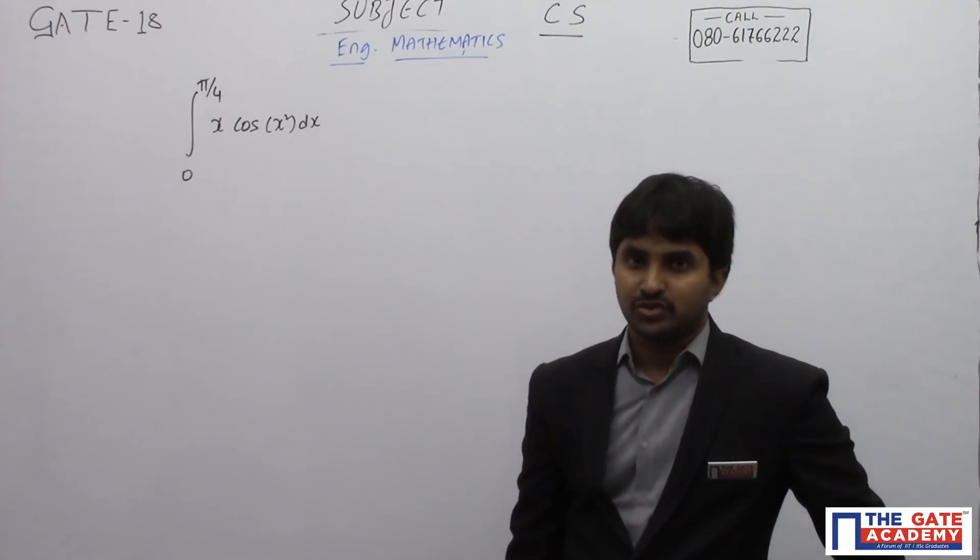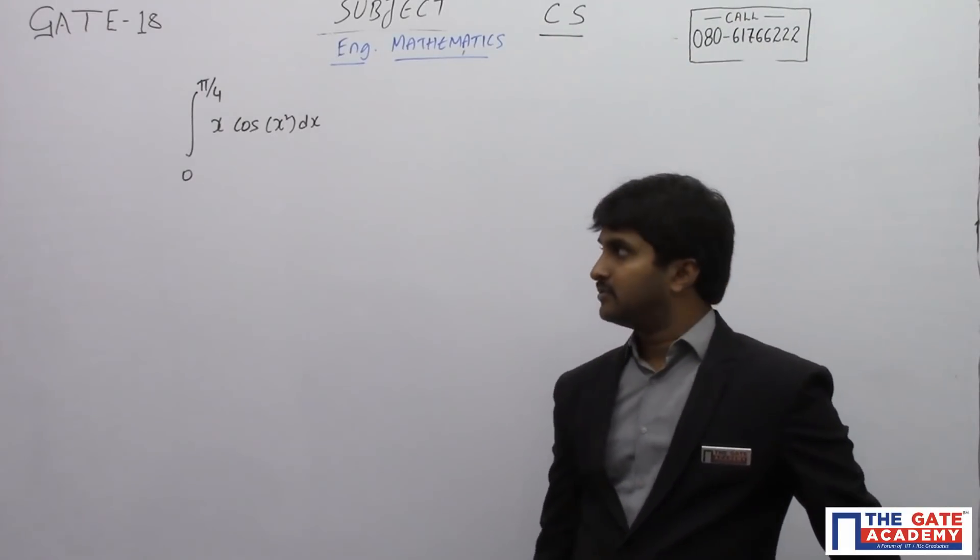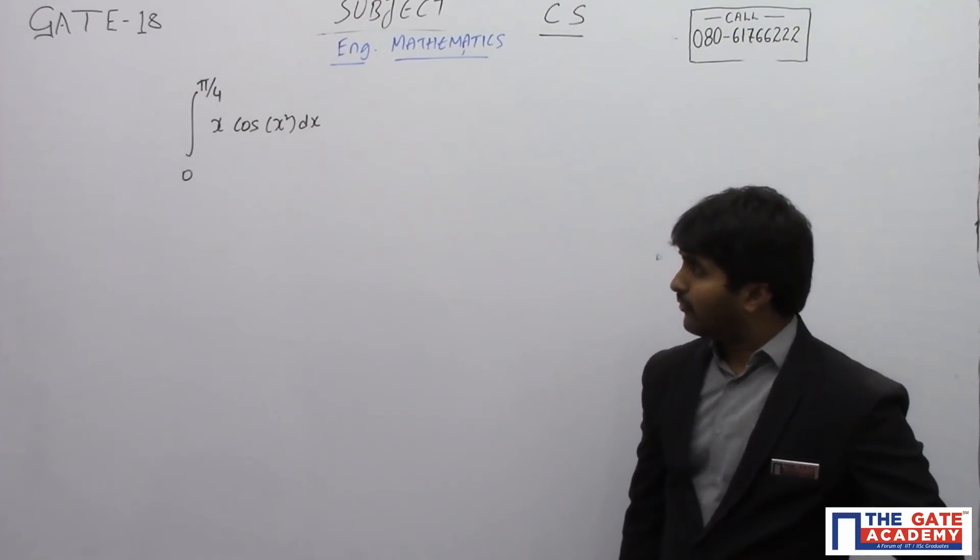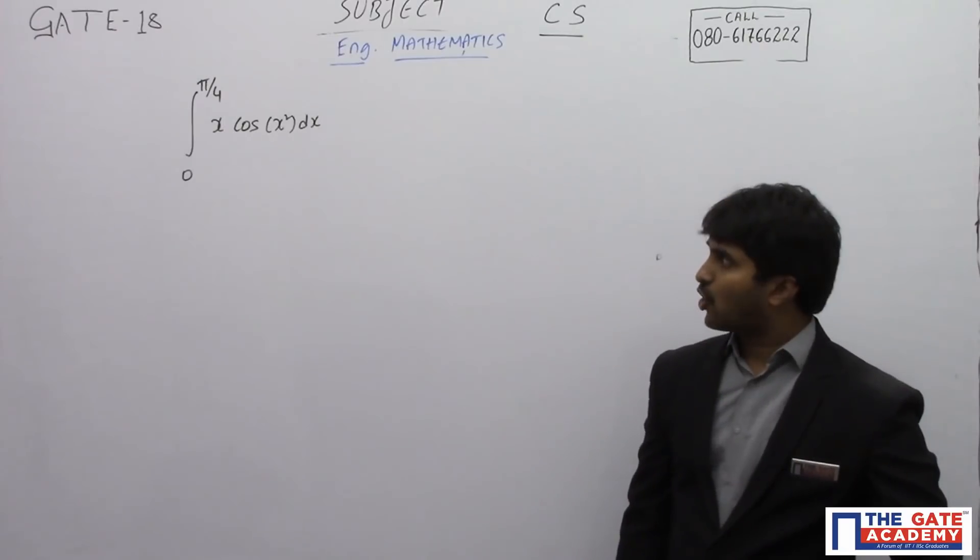Hello students, this question is from Computer Science GATE 2018. It's a very simple question from integral calculus. The integral from 0 to pi by 4 of x cos(x squared) dx is equal to?